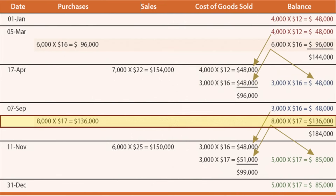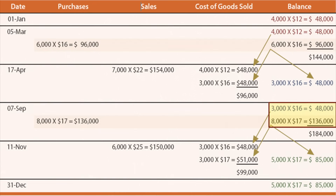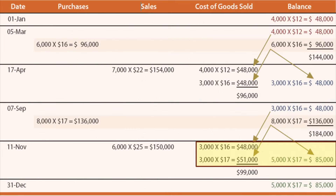On September 7th, we bought 8,000 units at $17, giving us total inventory of 3,000 units at $16 and a new layer of 8,000 at $17. Total cost of goods available for sale at that moment is $84,000. We then sold 6,000 units, peeling away chronologically: 3,000 from the first layer and 3,000 from the 8,000-unit layer went to cost of goods sold, while 5,000 units remained as inventory. Cost of goods sold for that sales transaction was $99,000.